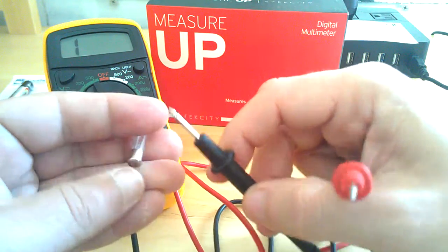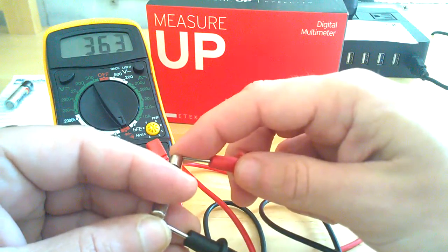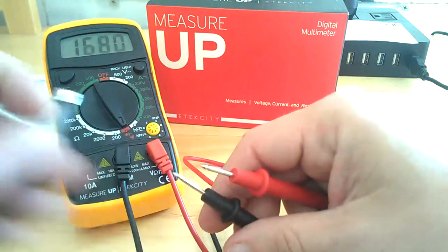Now, for checking fuses, you don't have to worry about positive and negative, you simply put it on one side, you put it across to the other, and if you get that beep, you know that that fuse is good.